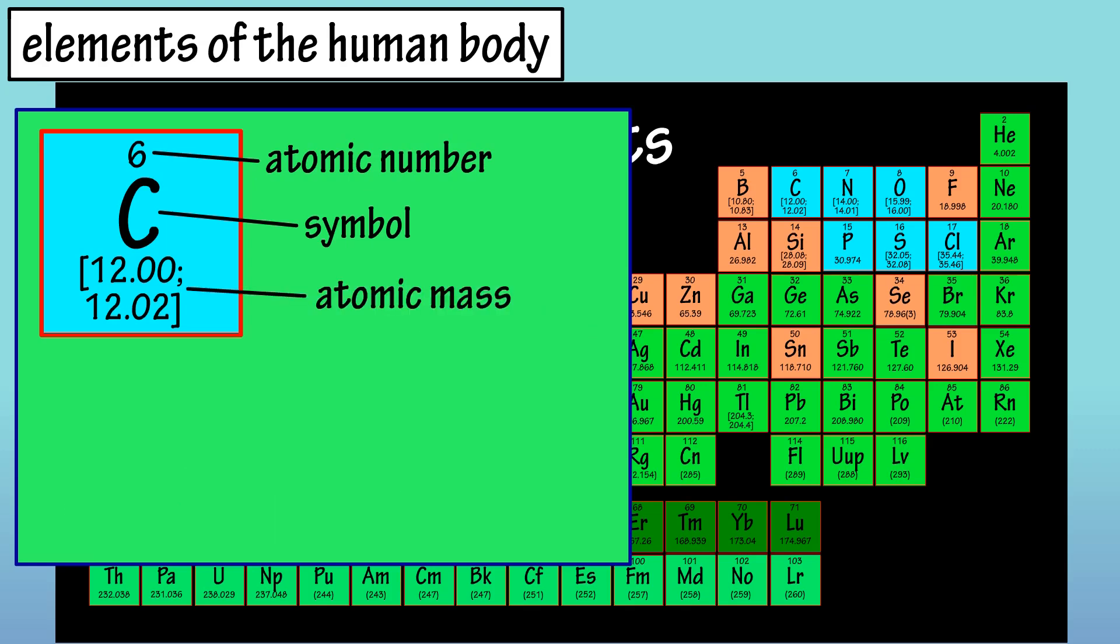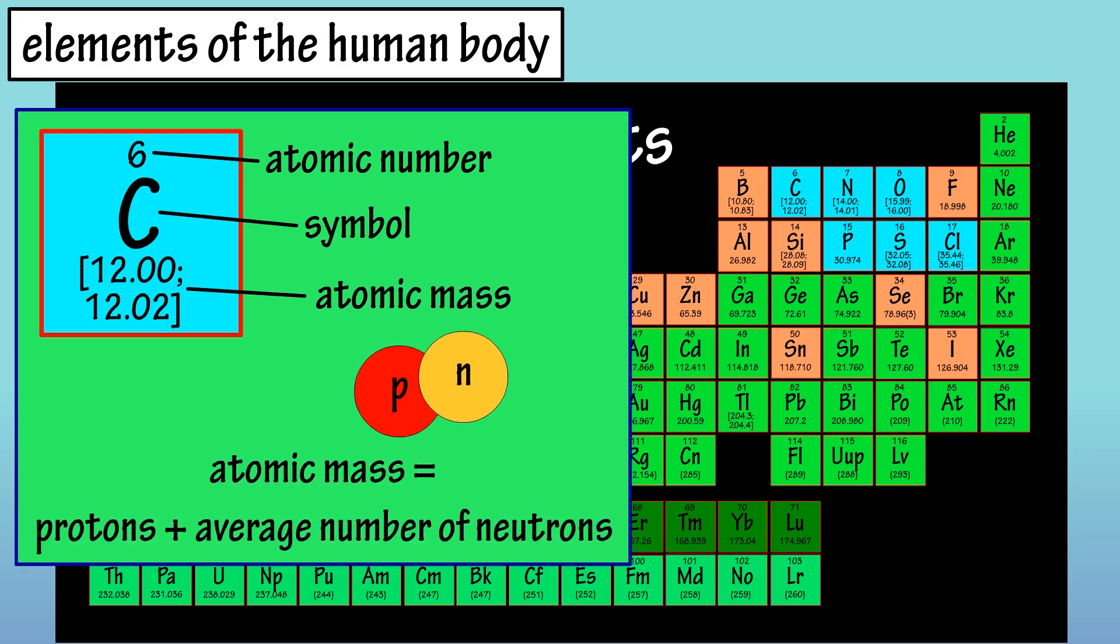This bottom number is the atomic mass or mass number of a single carbon atom. It is equal to the number of protons and the average number of neutrons in the nucleus. These brackets here signify a range for the atomic mass of carbon, because there are some carbon atoms that have different numbers of neutrons in their nucleus. These are called isotopes. There are many different elements that can have several different isotopes.